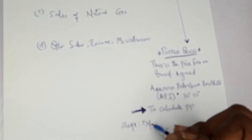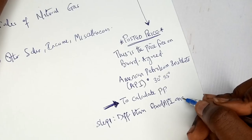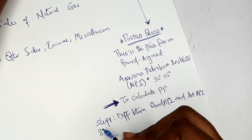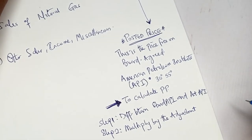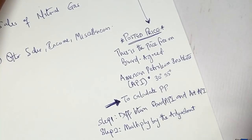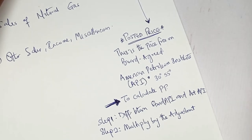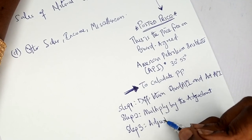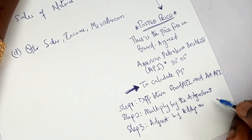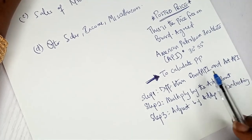Step two is to multiply that difference by the adjustment factor provided in the question — for example, 50 cents per degree rise or fall. Then step three is to add or deduct that adjusted amount from the standard posted price to arrive at the new posted price. For instance, if the standard API is 30 degrees at $50 per barrel and the actual API is 35 degrees, the difference is 5 degrees.